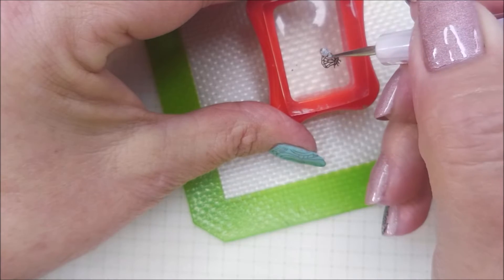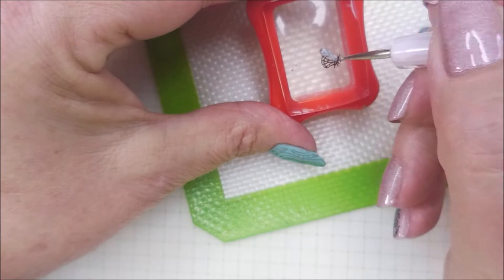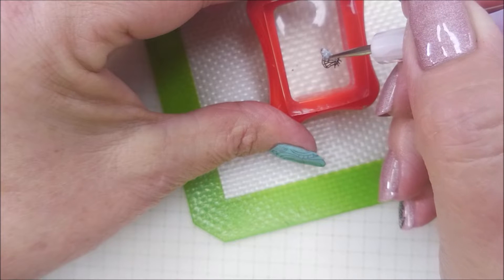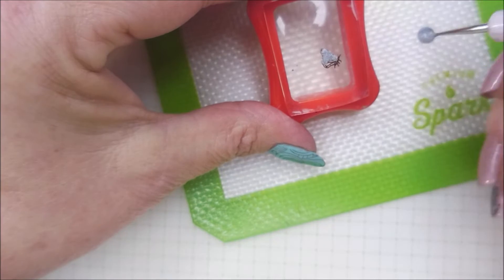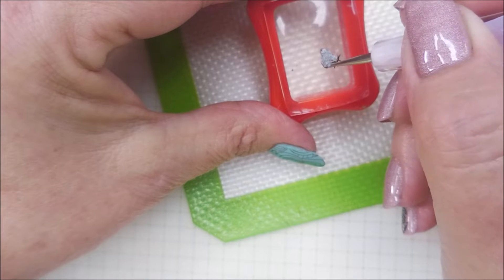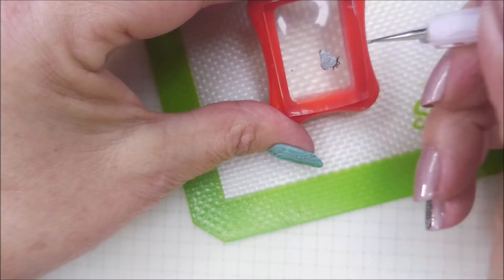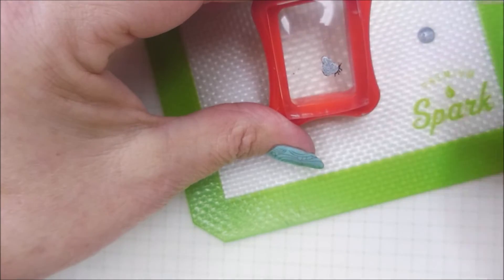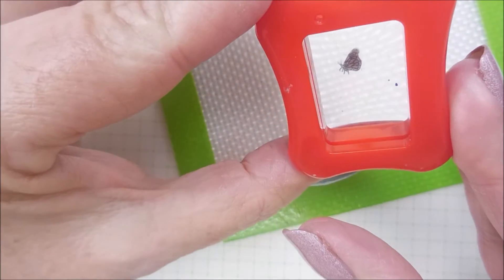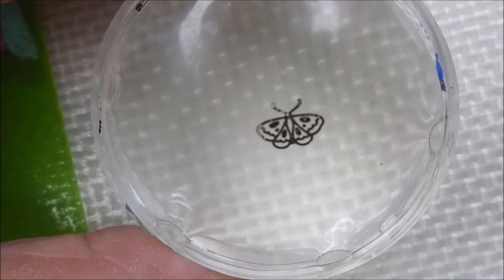So here we go. I'm going to get that excess up with the tape. And carry on. I'll be using that holo, there beautiful, from Hit the Bottle. And my tiny, tiny little dotting tool to fill in these little bitty images. I just thought these would look really cute. And I just didn't want playtime to be over. I wanted to keep playing. So that's what I did.